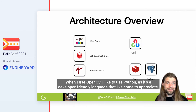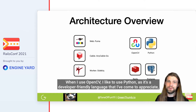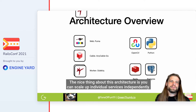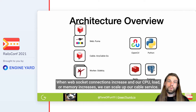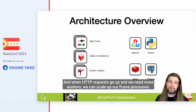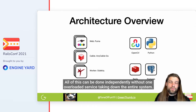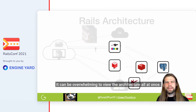When I use OpenCV, I like to use Python — it's a developer-friendly language very similar to Ruby but with some differences. The nice thing about this architecture is you can scale up individual services independently. As work and jobs increase for the background workers, we can scale up our Sidekiq processes or servers. When WebSocket connections increase and CPU load or memory increases, we can scale up our cable service. When HTTP requests go up and we need more workers, we can scale up our Puma processes. All of this can be done independently without one overloaded service taking down the entire system.